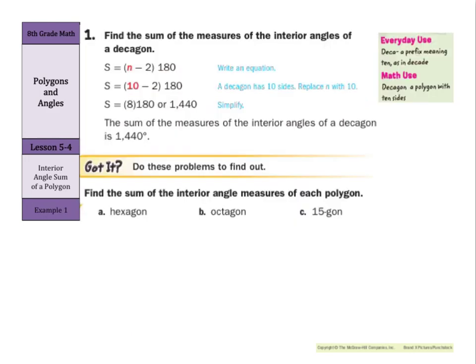So to find the sum of measures of the interior angles of a decagon. Now think decagon, think decades. There are 10 years in a decade. So a decagon is a polygon with 10 sides. So we always start with our equation first here, S = (n - 2) × 180. Then rewrite it, putting your substitution, making in the 10.